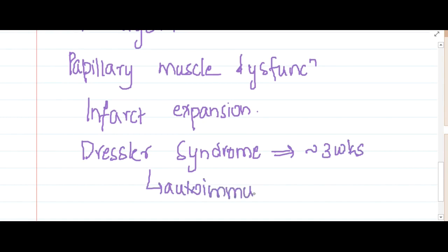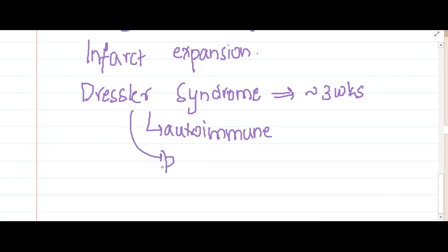There is one more complication called Dressler syndrome. This occurs weeks after MI, almost three weeks after myocardial infarction. It is an autoimmune condition associated with antibodies forming against the heart tissue, resulting in formation of pericarditis.